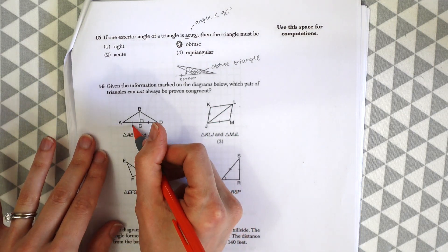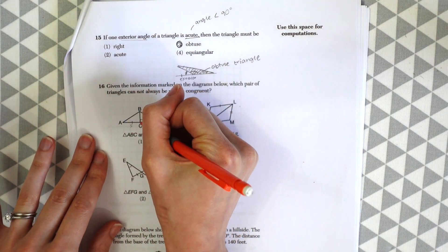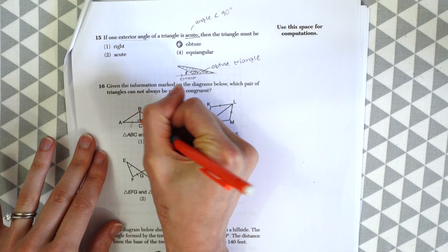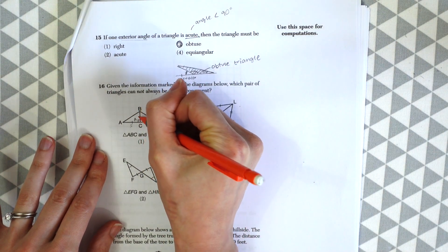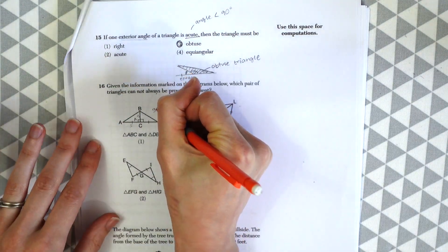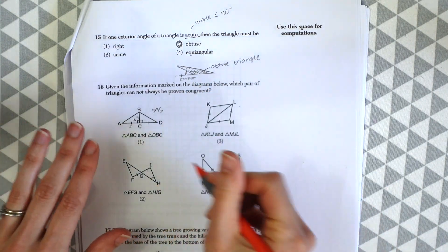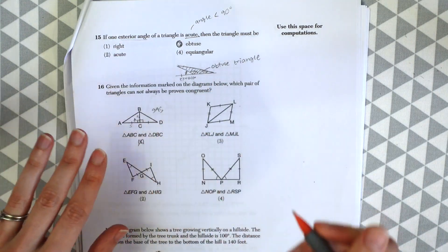So in choice one, we have side, angle, right, because they're both 90 degrees, side, angle, and a side. So that one we know. Side angle side. That's a real thing that we can prove triangles congruent, so that's not our answer.